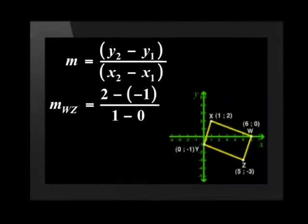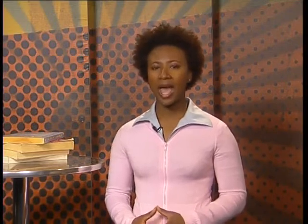I've already worked out the gradients of WZ and XY. Have a look. They both came to 3 over 1 or just 3. So WZ and XY are parallel, and both pairs of opposite sides are parallel, and that means that WXYZ is a parallelogram. We could have used some of the other properties of a parallelogram.